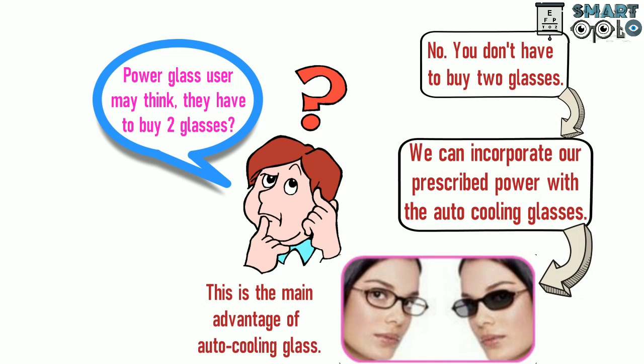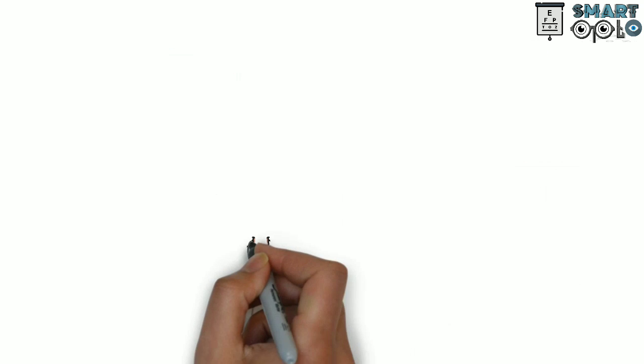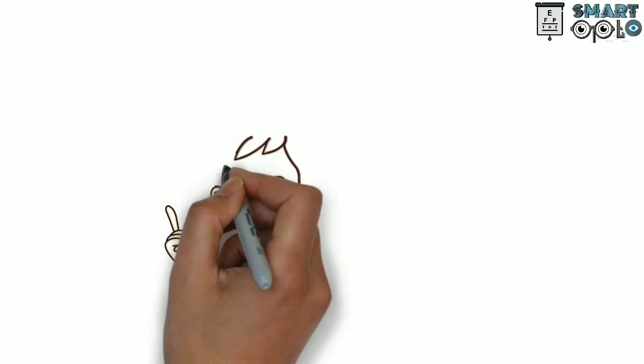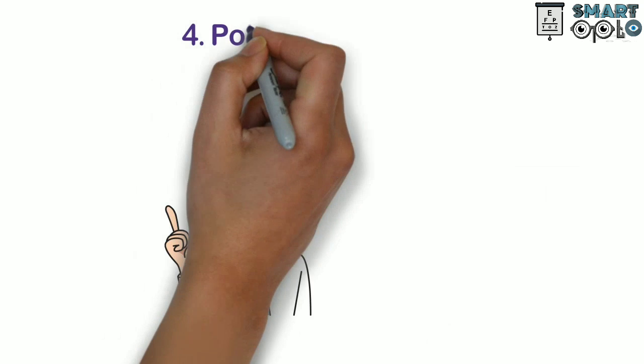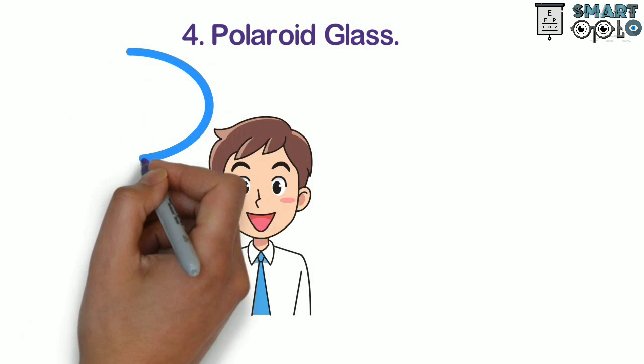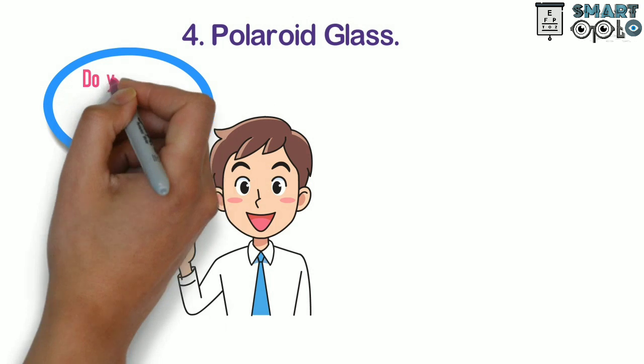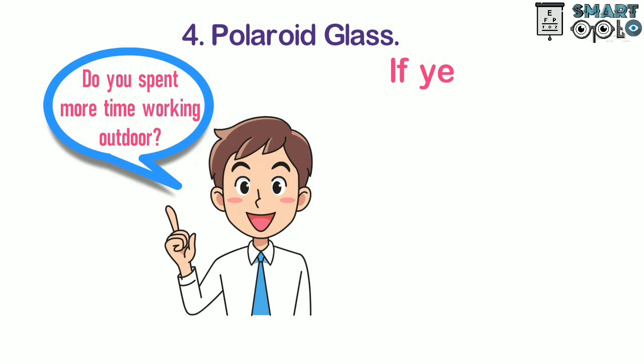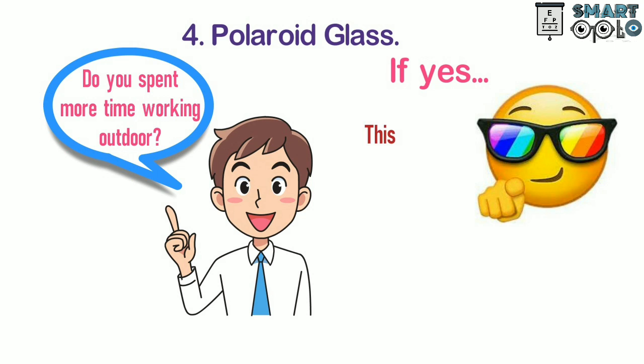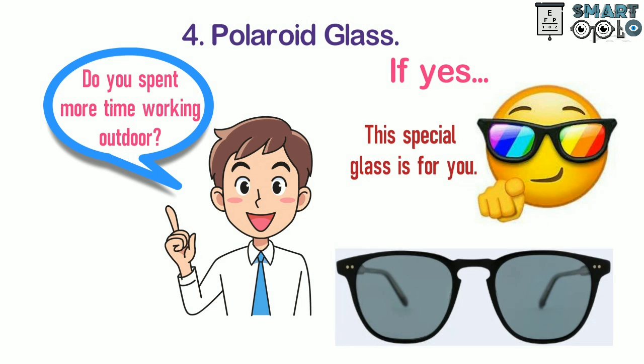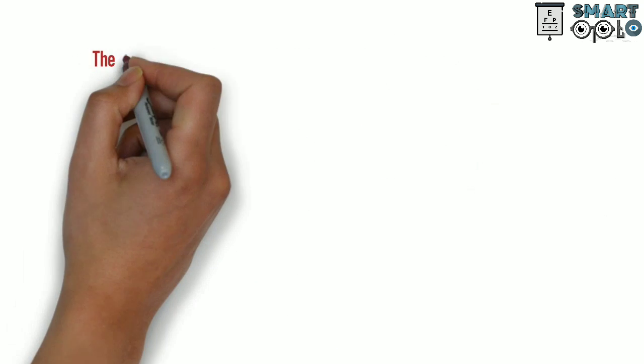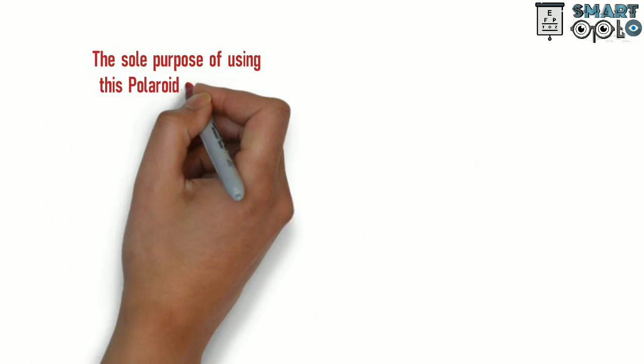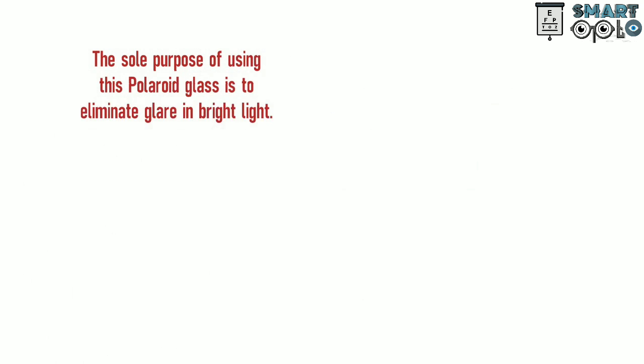Now let's see the fourth type of special glass. It is Polaroid glass. Do we spend more time working outdoor? If yes, the special glass is for you.